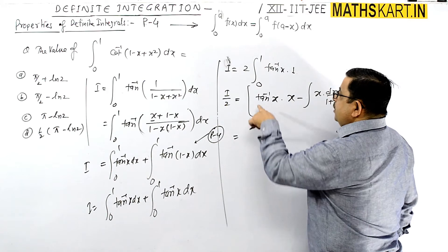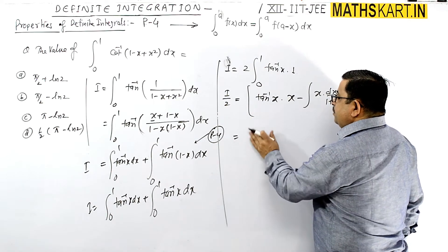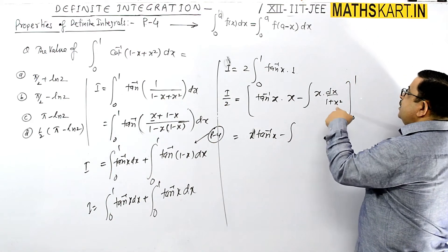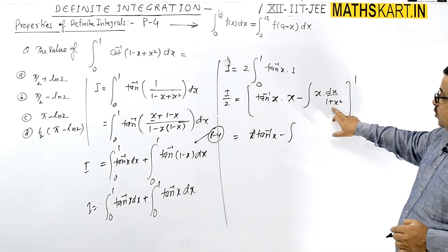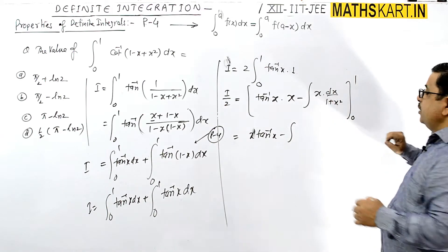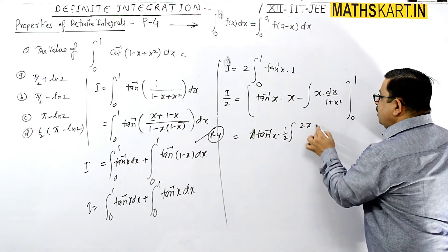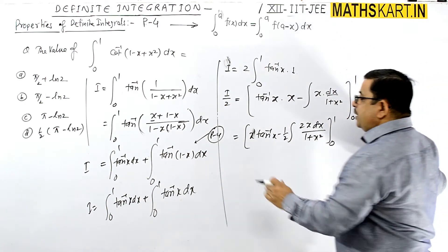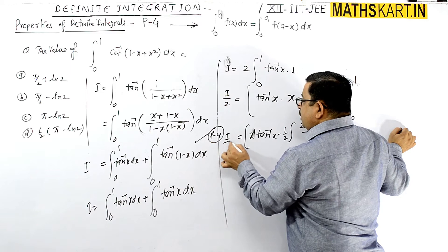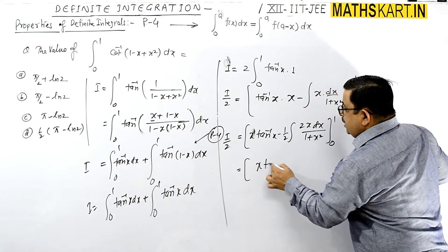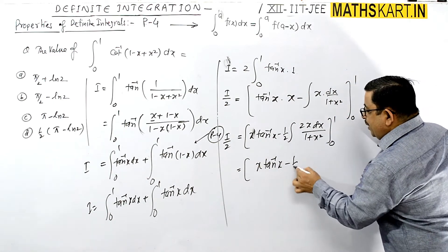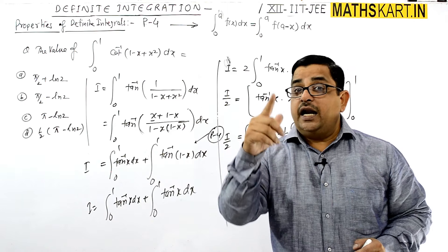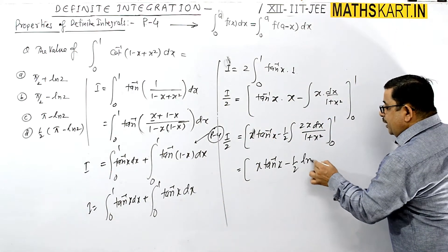So this is x times tan inverse x, and we still need to work out the remaining integral. If we let 1 plus x squared equal t, then 2x dx equals dt, so we divide by 2 and multiply by 2, giving x dx upon (1 plus x squared). Limit 0 to 1 is still pending. Simplifying: x tan inverse x minus 1 by 2 — letting 1 plus x squared equal t gives 2x dx = dt.